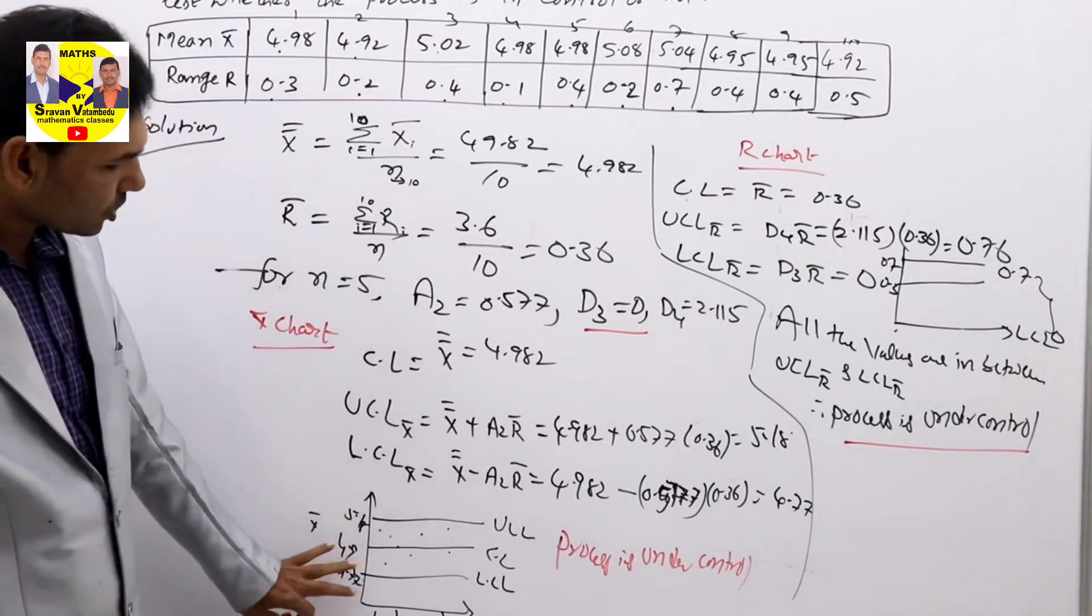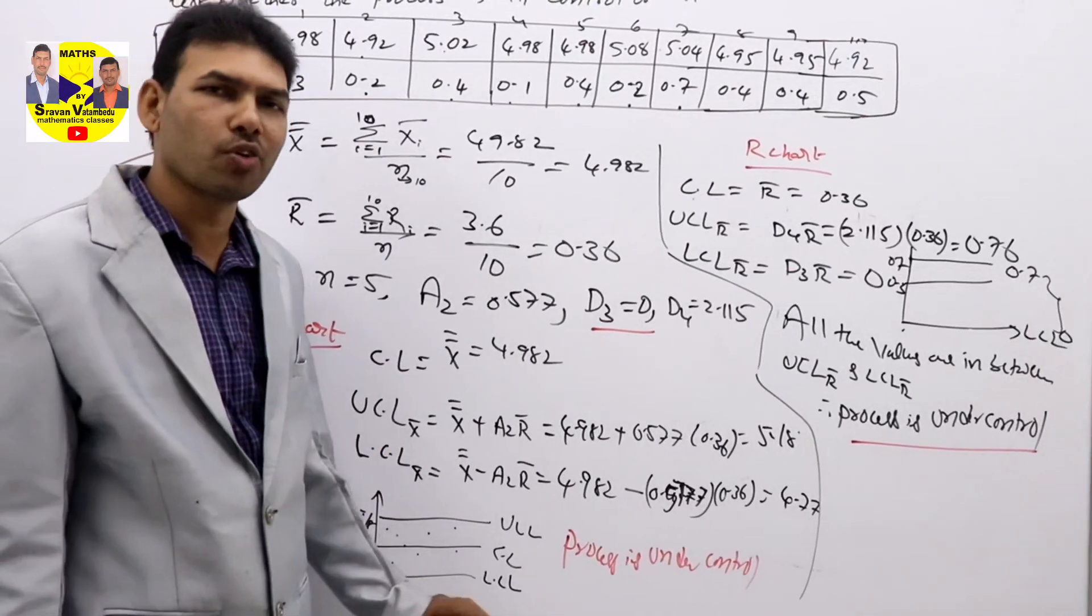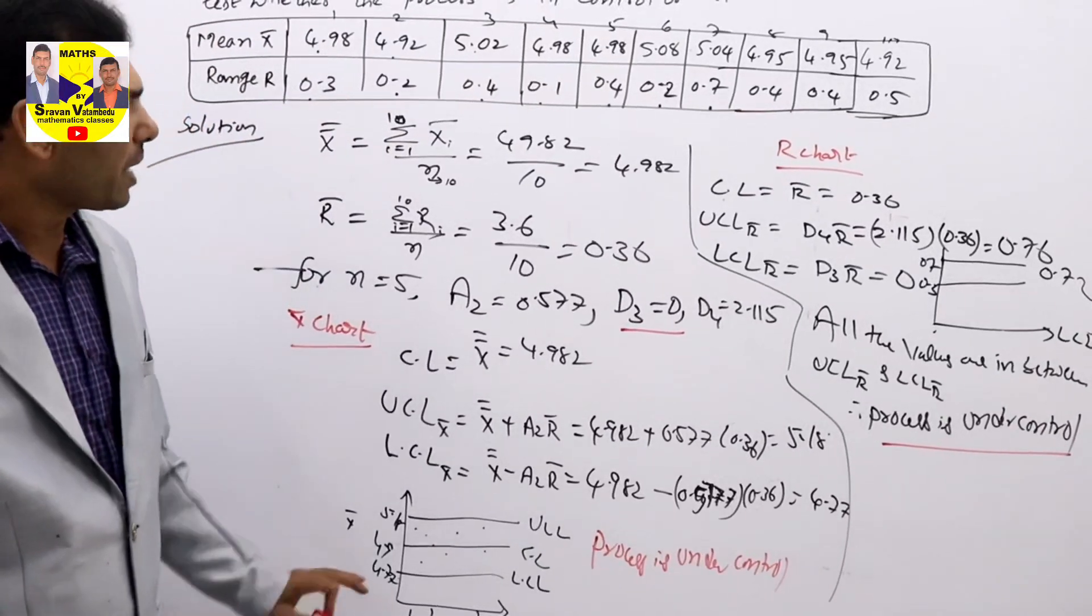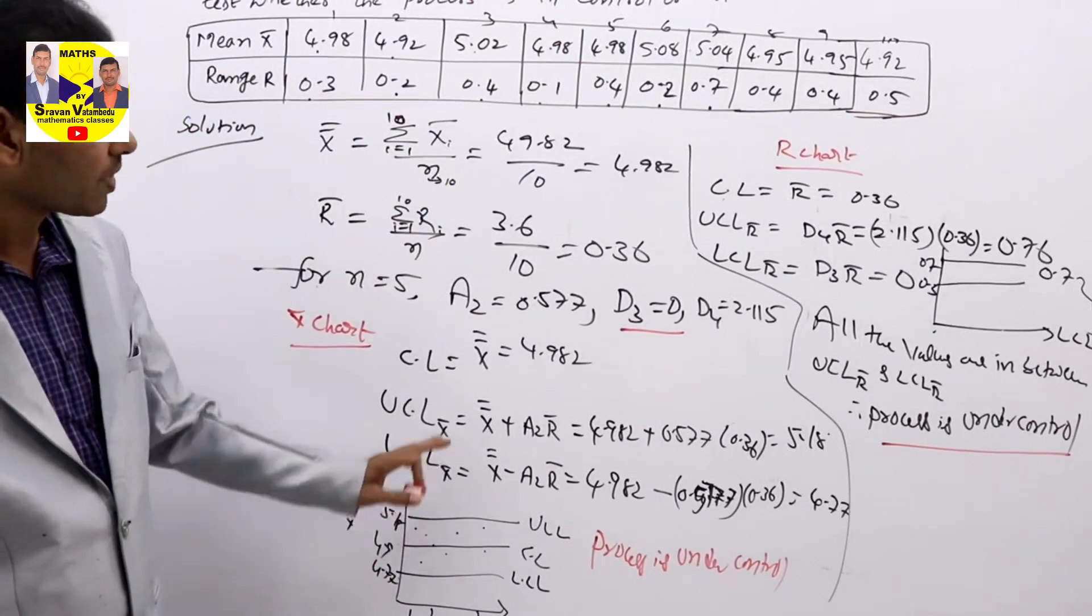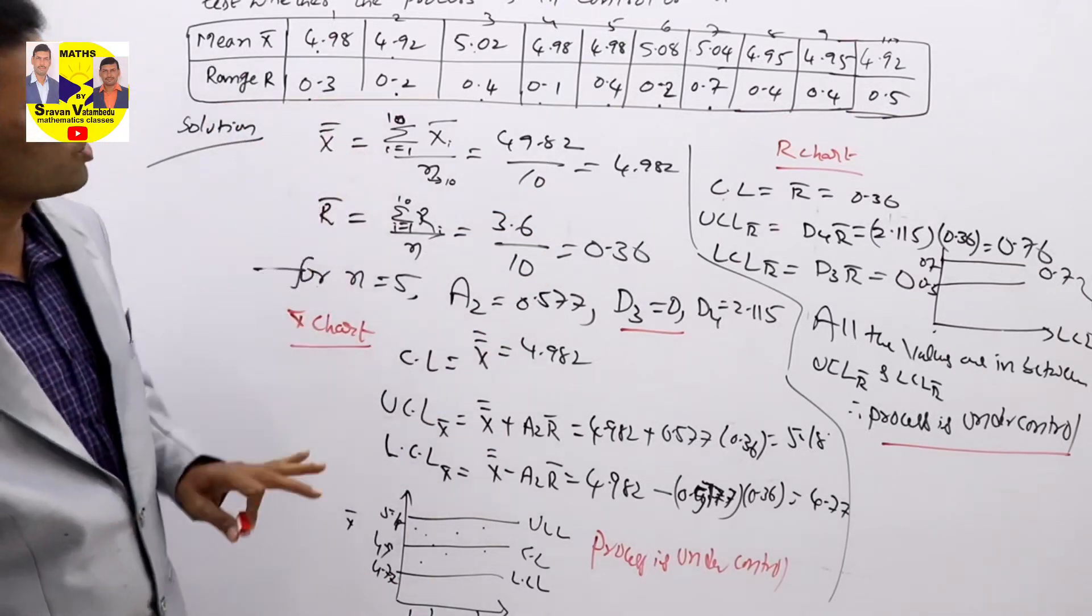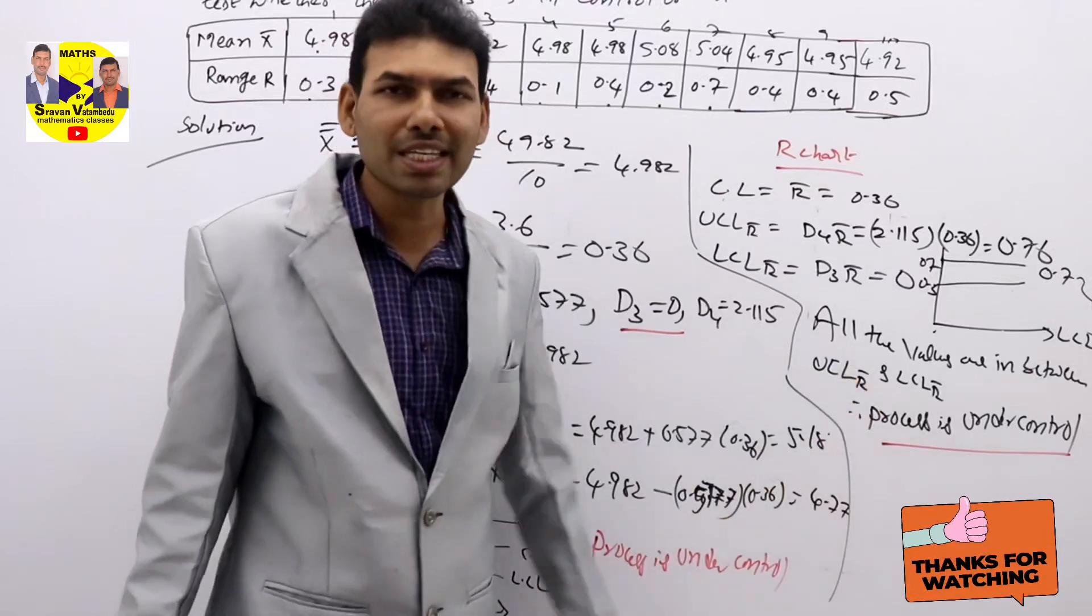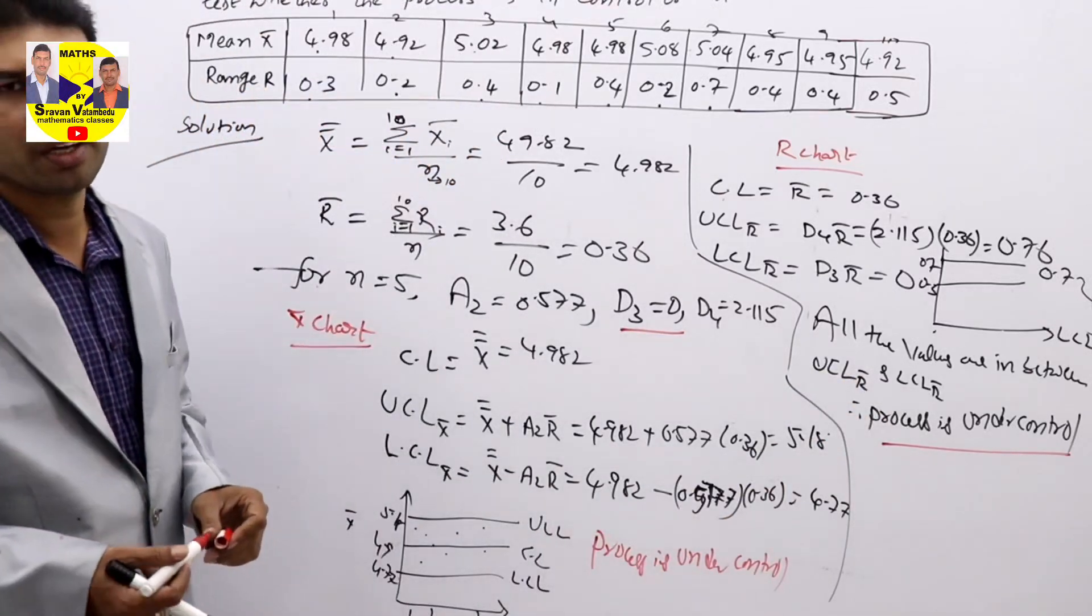If you want, you can draw the chart also. Simply without drawing chart also, we can decide processes are out of control or under control by checking all the values of mean are in between UCL and LCL. In the case of range chart, all the range values are in between UCL and LCL, we can easily say process is under control. Okay?